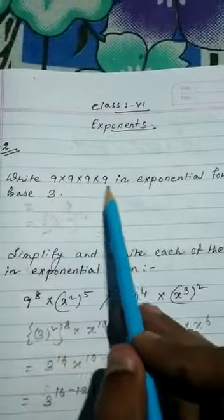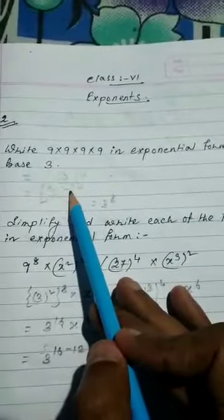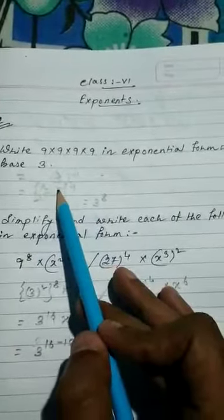How many 9's are there? Four 9's. So that means 9 to the power 4. So 9 means what? 3 squared. So 3 squared to the power 4. What will the result be? 2 times 4 is 8. So 3 to the power 8.